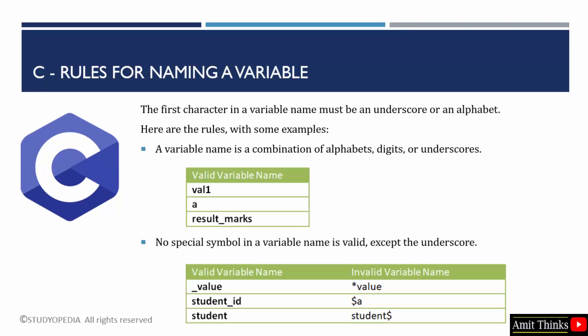When you create a variable name, the first character must be an underscore or an alphabet. We are discussing the rules for naming a variable before covering an example. The first rule: a variable name is a combination of alphabets, digits, or underscores. The valid variable names shown here cover this point. You can add a number in a variable name like val1, a single letter like 'a', or use underscores like result_marks to store the value of marks.